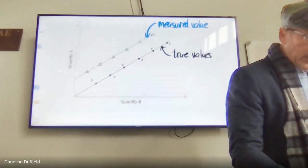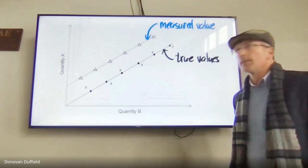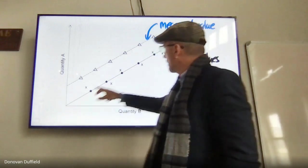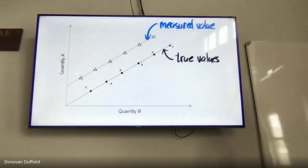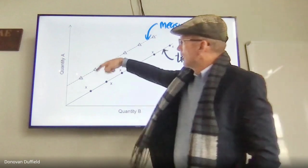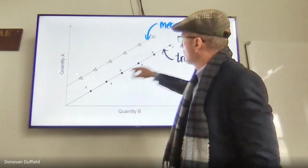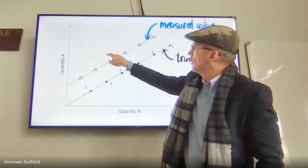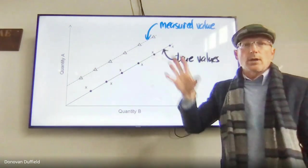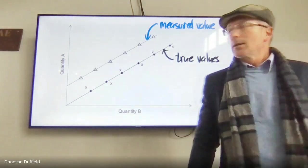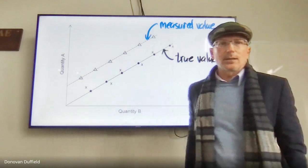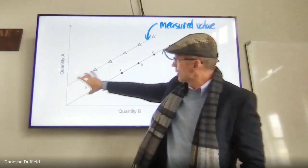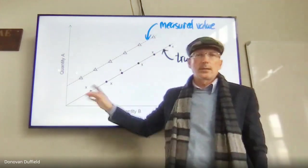When looking at a graph comparing measured values to true values: random fluctuations appear as points scattered on either side of the line of best fit. A systematic error is visible when the measured values are consistently offset from the true values from the start, all the way through — that's a systematic error. For example, if this is a mass versus volume graph and the initial mass value wasn't zero, that error carries through the entire dataset.